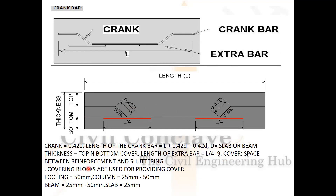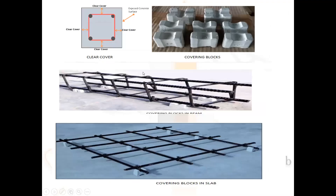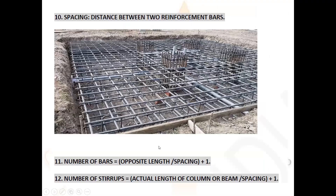Cover blocks are used to provide the required cover. For footings we provide 50mm cover; for columns, 25 to 50mm depending on size; for beams, 25 to 50mm; for slabs, 25mm. Clear cover means the cover measured from the reinforcement stirrups. This is how cover blocks are tied for beams and slabs.